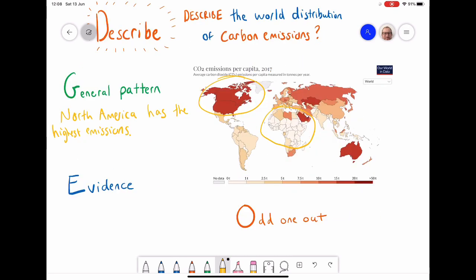Looking at this question, I've circled two areas. I'm looking at the general pattern, and I've circled these two areas because we can say North America generally seems to have the highest emissions. And if I look at most of Africa, then most of Africa has generally very low emissions.